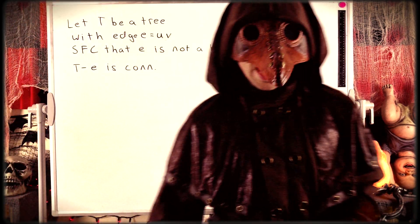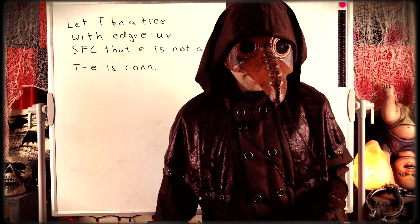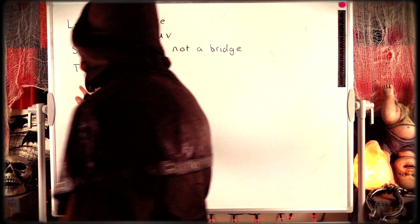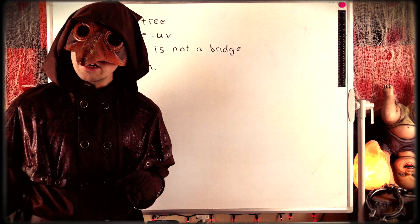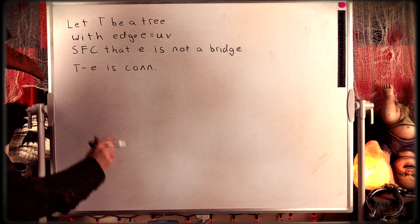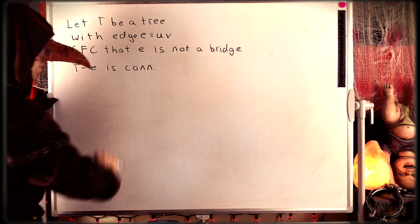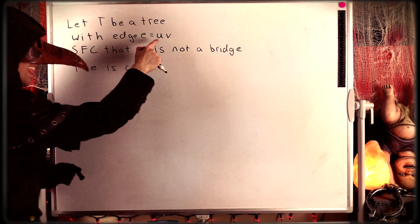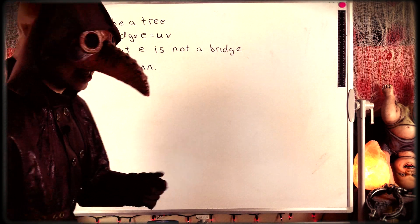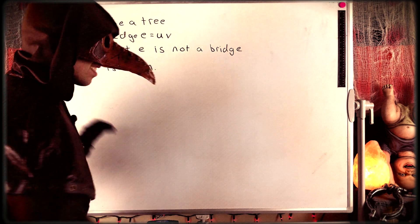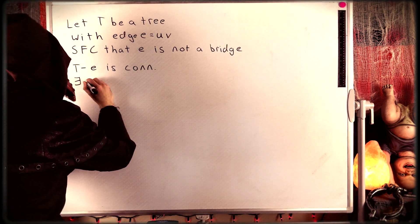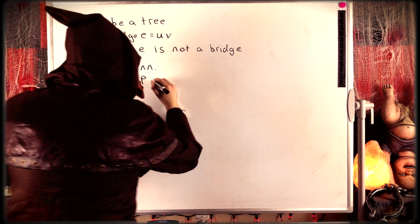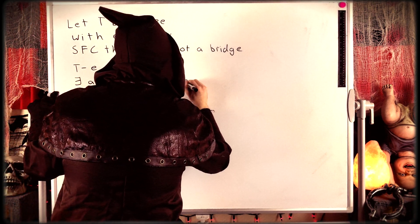The contradiction we're going to get here is that the graph T must contain a cycle, which contradicts the fact that T is a tree. Since T minus E is connected, by definition of a connected graph, there must exist a path connecting the vertices U and V in the graph T minus E — because remember, we just deleted the edge joining U and V, but we did not delete U and V. Since the graph is connected, there must exist a path connecting them. There exists a path that we'll call P connecting U and V in our graph T minus E.